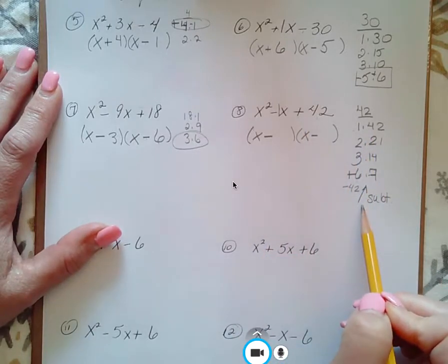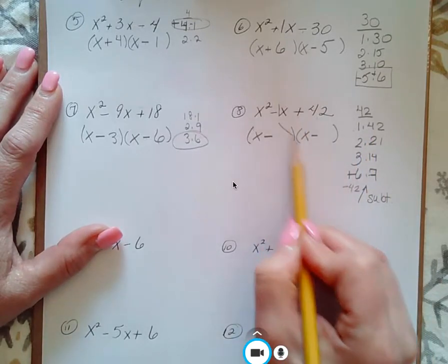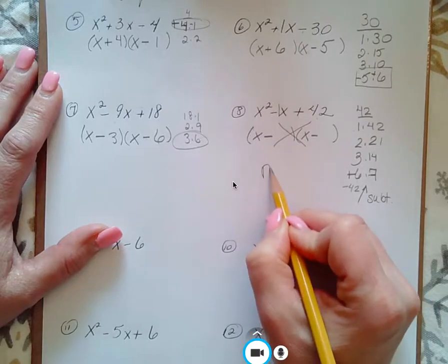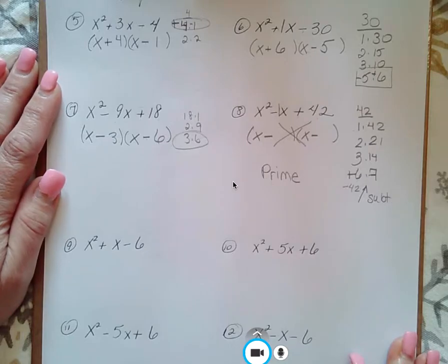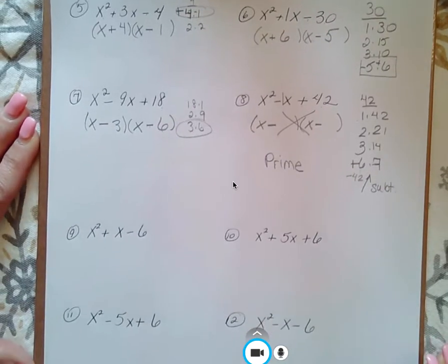So we've looked at all of our pairs of numbers. None of them work. So this is prime. And it's like trying to factor 17, right? Or 23. That's not going to work.